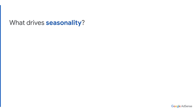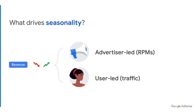There are various drivers for seasonality. During the high season, users spend more time online searching for presents or celebration ideas. Advertisers are then willing to pay more for inventory, leading to higher RPMs. These two factors drive seasonal spikes and dips in publisher earnings.